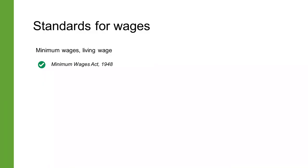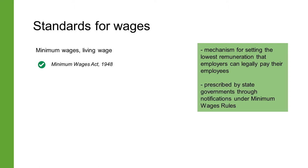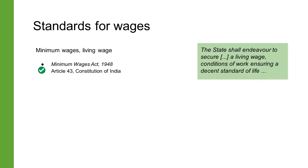The first is that of wages. The Minimum Wages Act of 1948 provides for fixing of minimum rates of wages in certain employments — it creates the mechanism for setting the lowest remuneration that employers can legally pay their employees. The minimum wages are prescribed by state governments through notifications in that state's gazette under its minimum wages rules. Article 43 of the Constitution of India requires the state to secure to all workers — agricultural, industrial, or otherwise — a living wage.